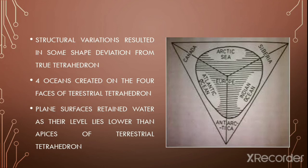Green also clarified that due to structural variations, there are some directions and deviations in the shape from a true tetrahedron. Four oceans — namely Pacific, Atlantic, Indian, and Southern Ocean — were created on the four faces of the terrestrial tetrahedron. These planar faces retained their water as their level lies lower than the apices of the tetrahedron.